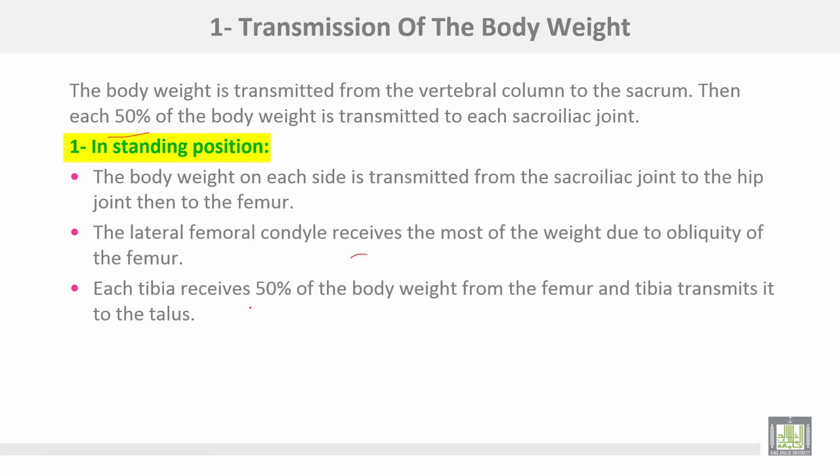In a standing position, the body weight on each side is transmitted from the sacroiliac joint to the hip joint, then to the femur. The lateral condyle of the femur receives most of the weight due to the obliquity of the femur.